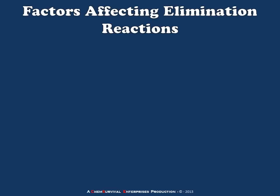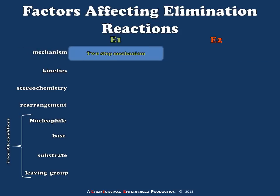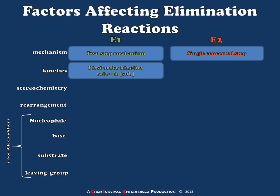Now that we've had a look at each of these two reaction mechanisms in action, let's think about the factors which affect them. First is the mechanism: the E1 reaction occurs as a two-step mechanism going through a carbocation intermediate, while the E2 happens in a single concerted step, much like our substitution reactions did. Because of this, we expect similar kinetics rules to apply — first order kinetics for the E1 and second order kinetics for the E2.